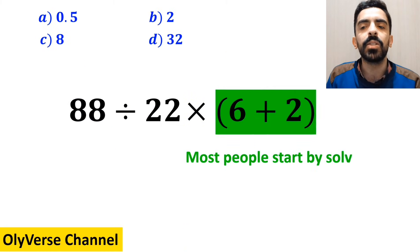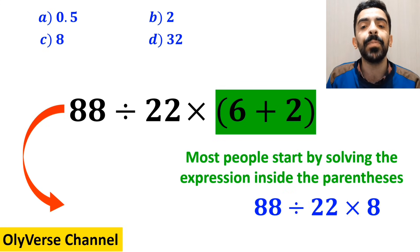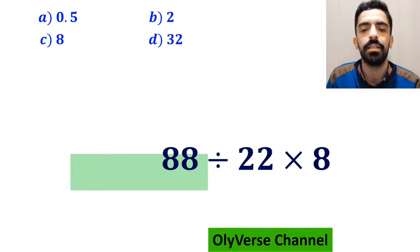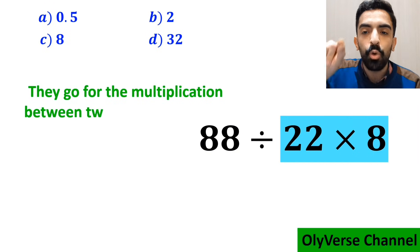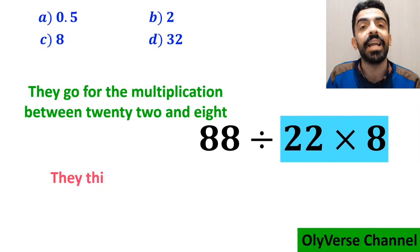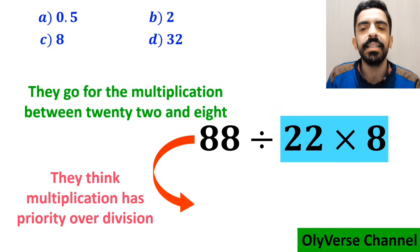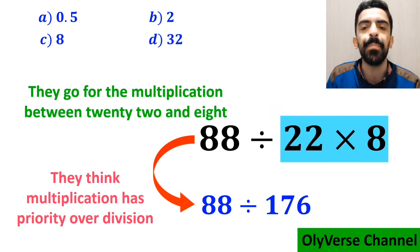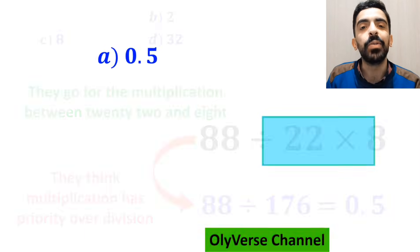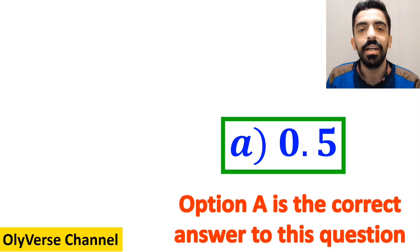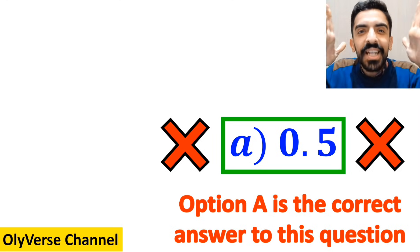In the first step, most people solve the expression inside the parenthesis and replace it with 88 divided by 22 multiplied by 8. In the next step, they go for the multiplication between 22 and 8 because they think multiplication has priority over division. So this expression simplifies to 88 divided by 176, which gives the answer 0.5. Immediately, they say that Option A is the correct answer. However, that's definitely wrong!